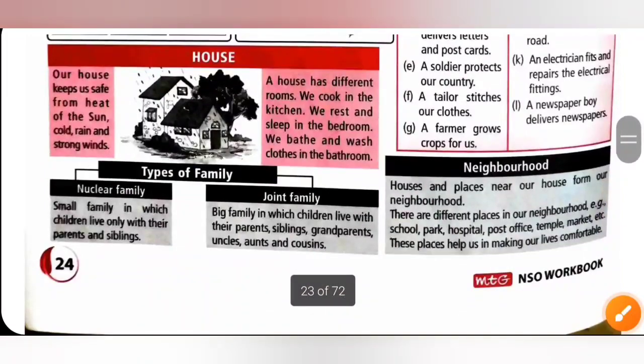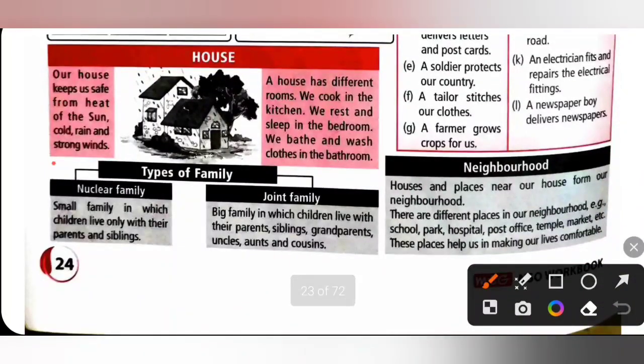Next, house. Our house keeps us safe from heat of the sun, cold, rain and strong winds. A House has different rooms. We cook in the kitchen. We rest and sleep in the bedroom. We bath and wash clothes in the bathroom.